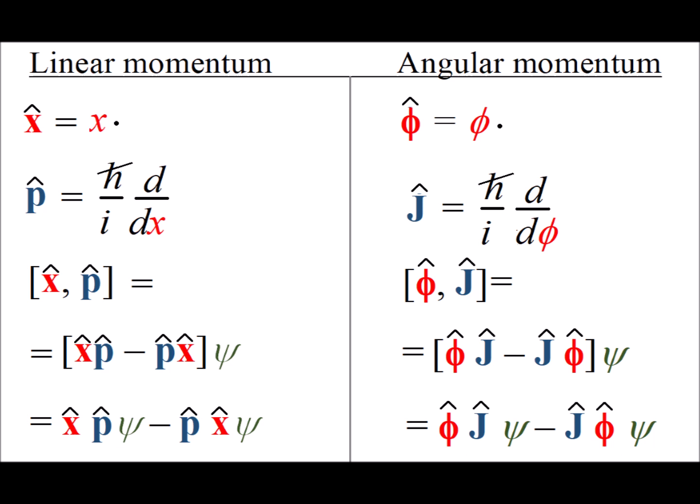Notice that since there is a formal correspondence between x and phi, they are both shown in red. And since there is a formal correspondence between the linear momentum p and the angular momentum j, those are both shown in blue.